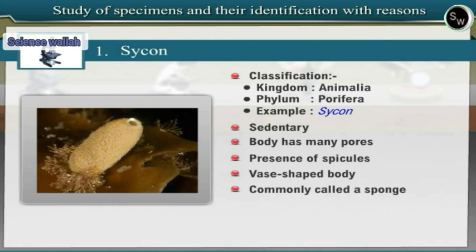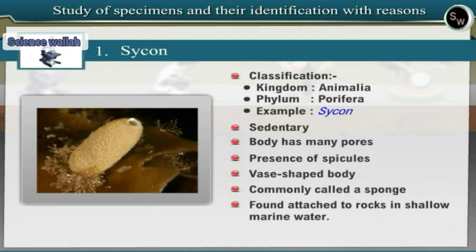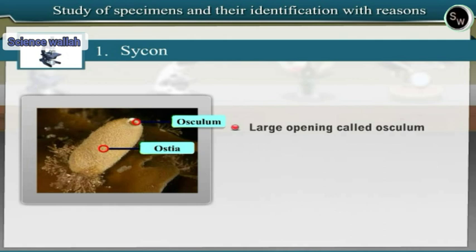Sponge is found attached to rocks in shallow marine water. It shows a number of cylindrical structures joined at the base. The body has many pores called ostia. At the top of the body lies a large opening called osculum. Water enters inside the body through the ostia and comes out from the osculum. The body wall is provided with many spicules.